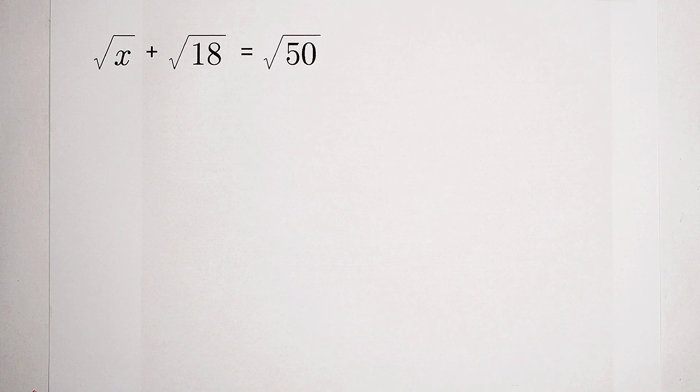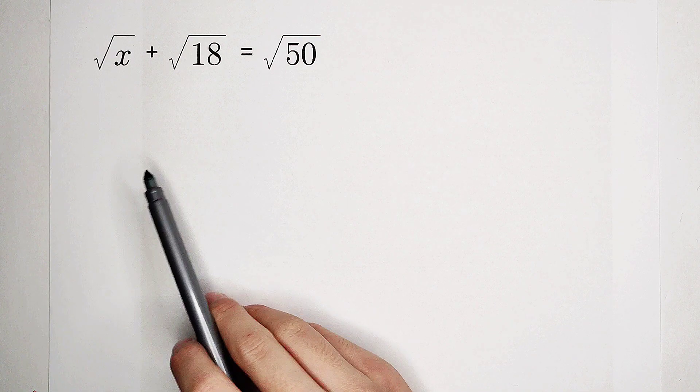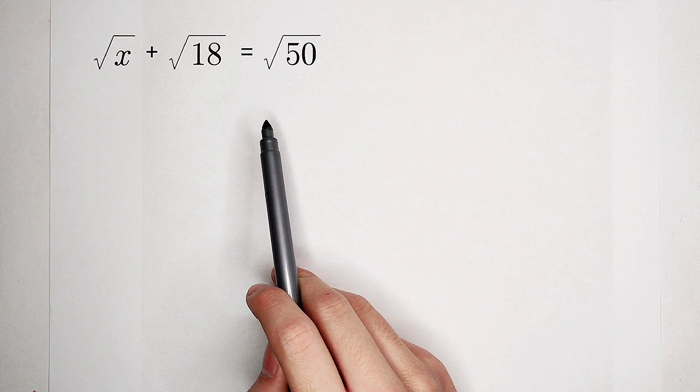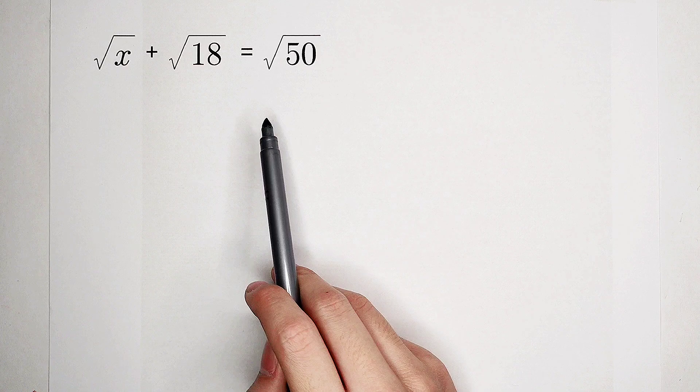Welcome to Math Window. How nice this question is. The square root of x plus the square root of 18 equals the square root of 50. How should we solve the value of x?